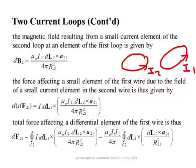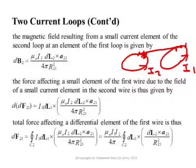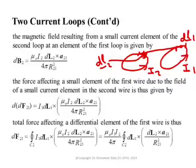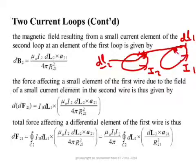To calculate this, what you have to do is take a small element of the second loop and find the magnetic field resulting from that element at one of the elements of the other loop. I will call this element dl1 on the first loop, and dl2 on the second loop. We then integrate to get the total magnetic field from the second loop at element dl1, and find the force on that element, then integrate over the first loop to get the total force.